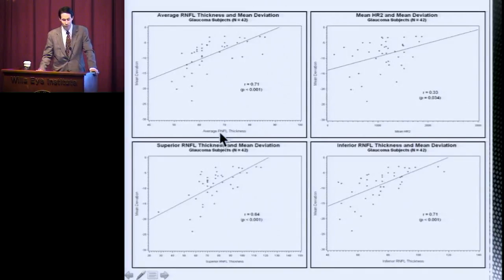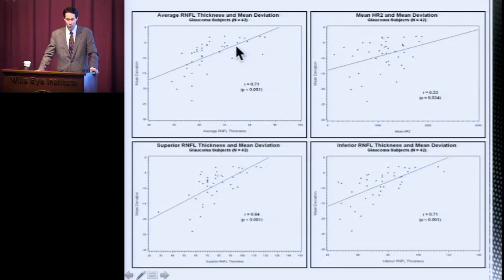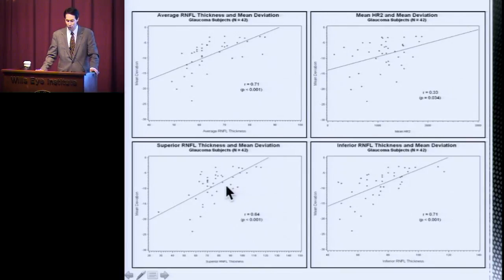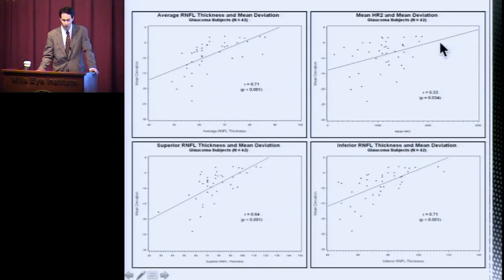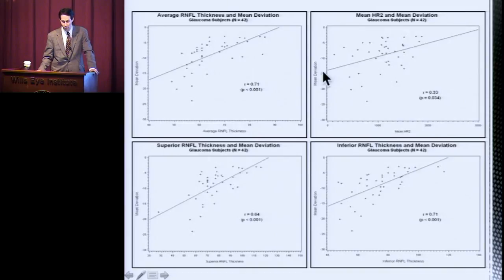When we correlate neurofiber layer thickness to mean deviation, you can see that there is a global correlation for all of the glaucoma subjects. And as shown in prior work, there is a correlation for the superior neurofiber layer thickness alone and inferior neurofiber layer thickness alone. Focusing here, you can see that the HR2 CORDA analysis was correlated significantly to the mean deviation on the visual field test.